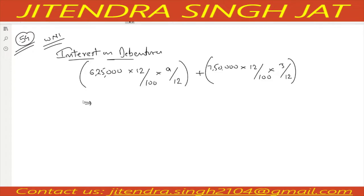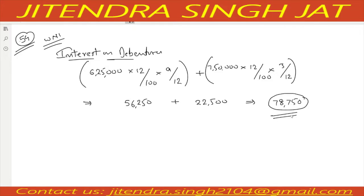Computing the interest: 6 lakh 25,000 × 12% × 9/12 = 56,250. Plus 7 lakh 50,000 × 12% × 3/12 = 22,500. Adding both: 22,500 + 56,250 = 78,750. So interest on debentures is 78,750. This completes Working Note 1.